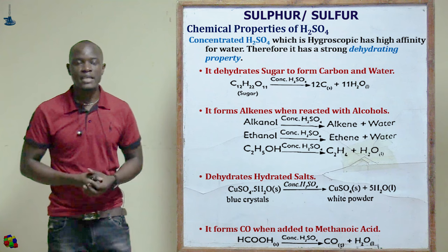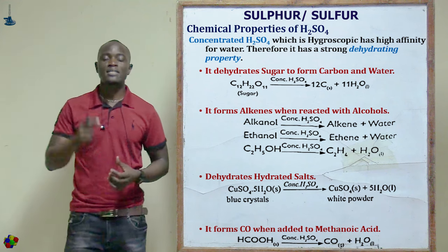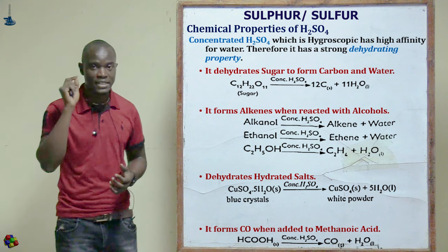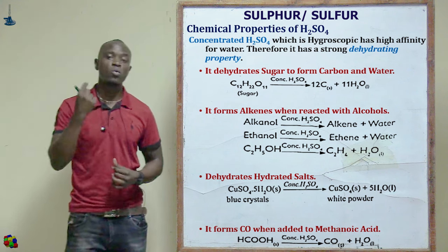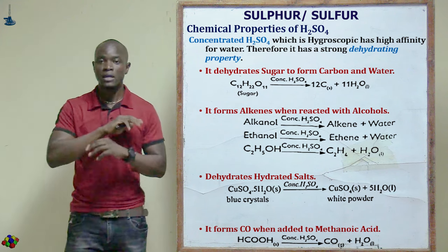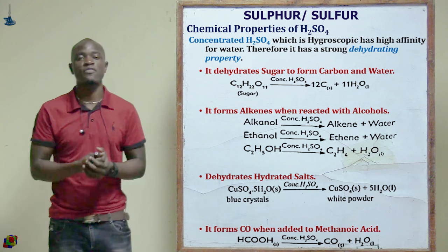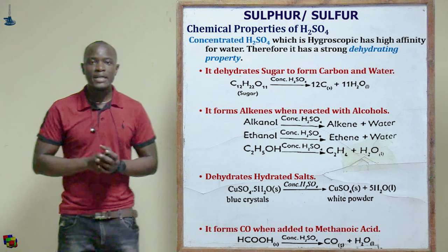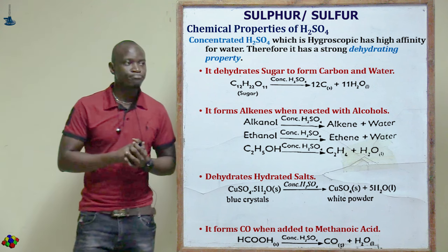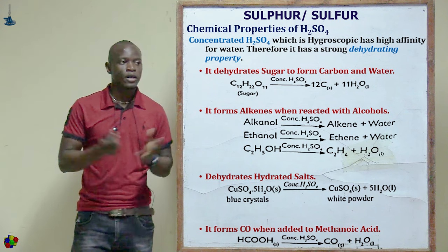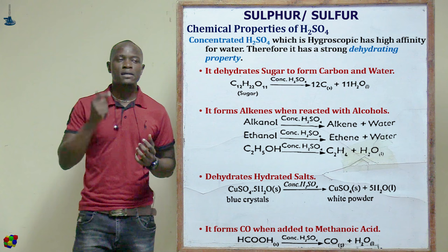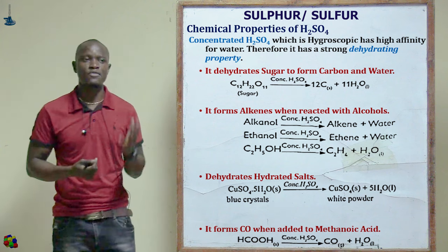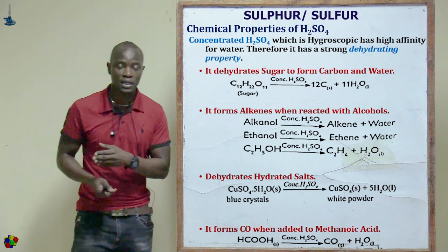The first property of concentrated sulfuric acid is that it has a very high affinity for water, and that is why it is used as a dehydrating agent to remove water vapor from the atmosphere or from air. Let's look at the reaction between concentrated sulfuric acid and sugar.